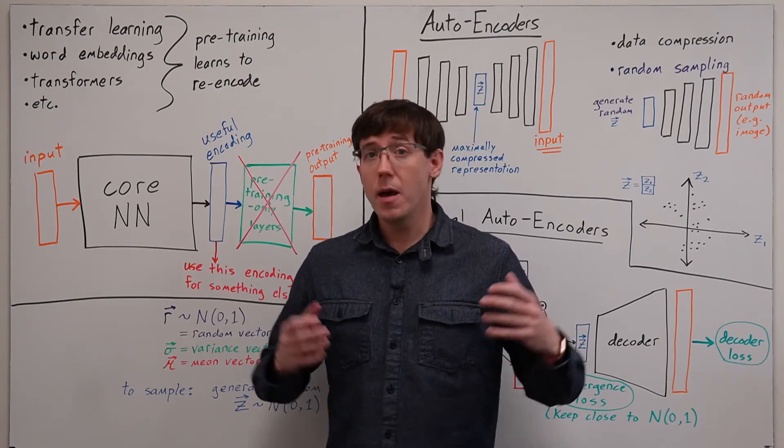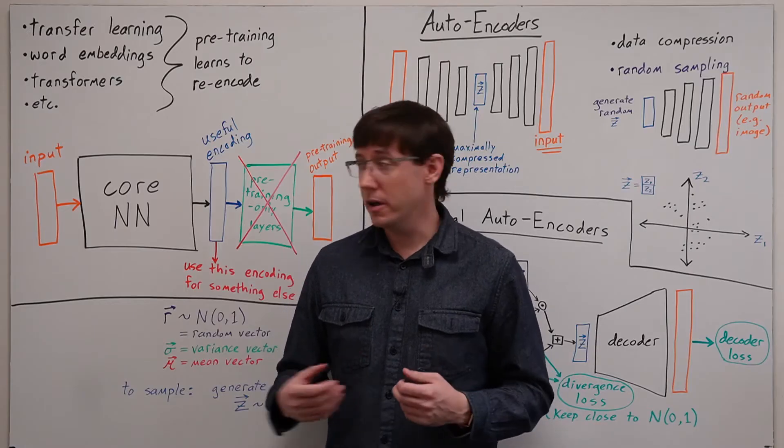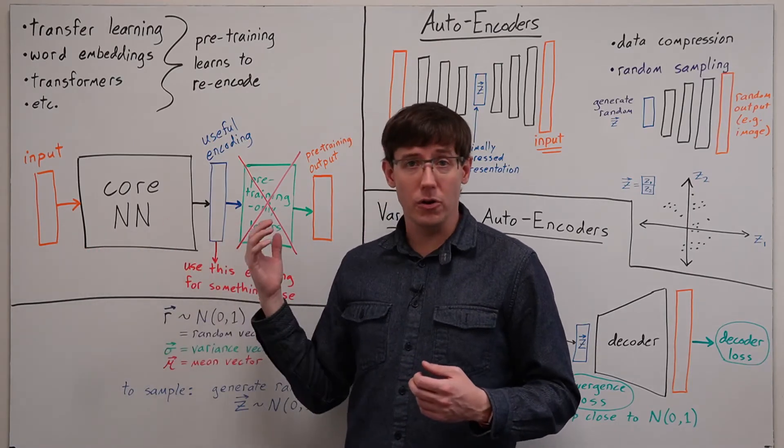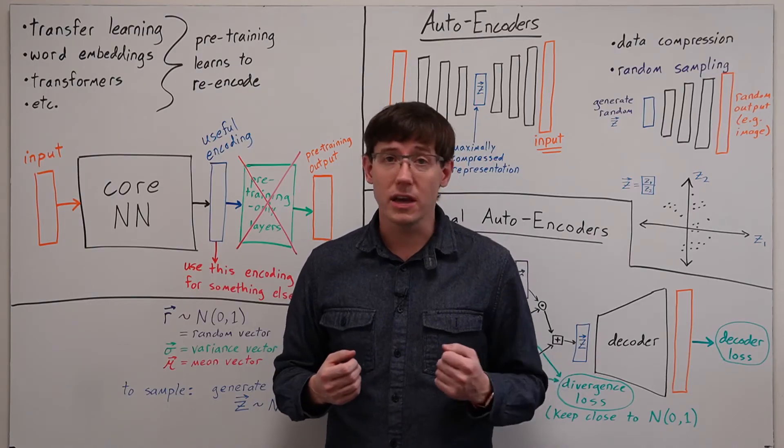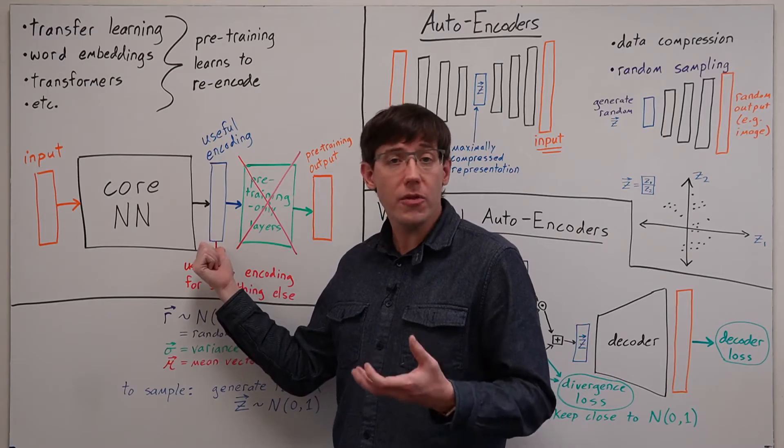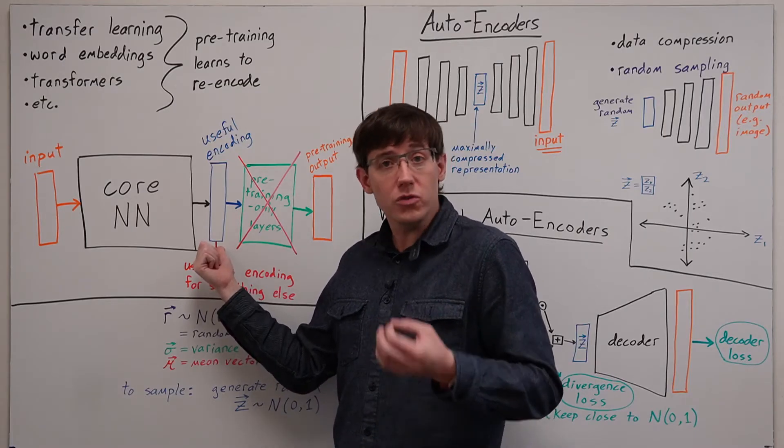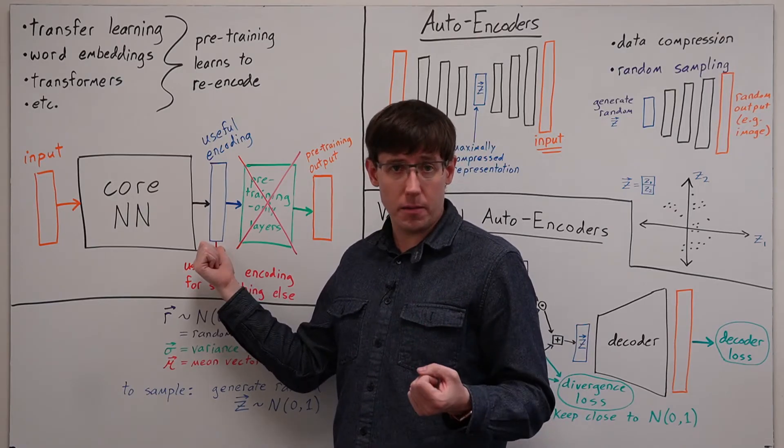An idea we encounter in many different deep learning contexts is that we can often train a neural network with one data set that's easy to get or easy to use, and then take some hidden layer from that network and use it as a way of encoding data.